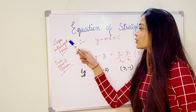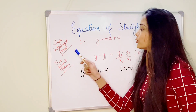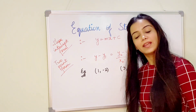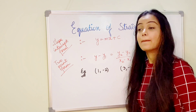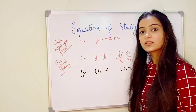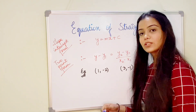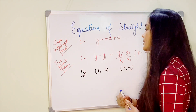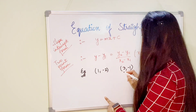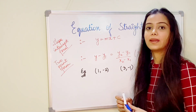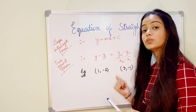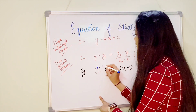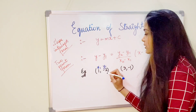After the slope-intercept form, we also have the two-point form, wherein we are given two points and we have to find the equation of the line using those two points, but the slope is not given directly. We find the slope using the coordinates. Suppose we are given points (1, -2) and (3, -1) and we have to find the equation of the straight line passing through them. We take x1 equal to 1 and y1 equal to minus 2.